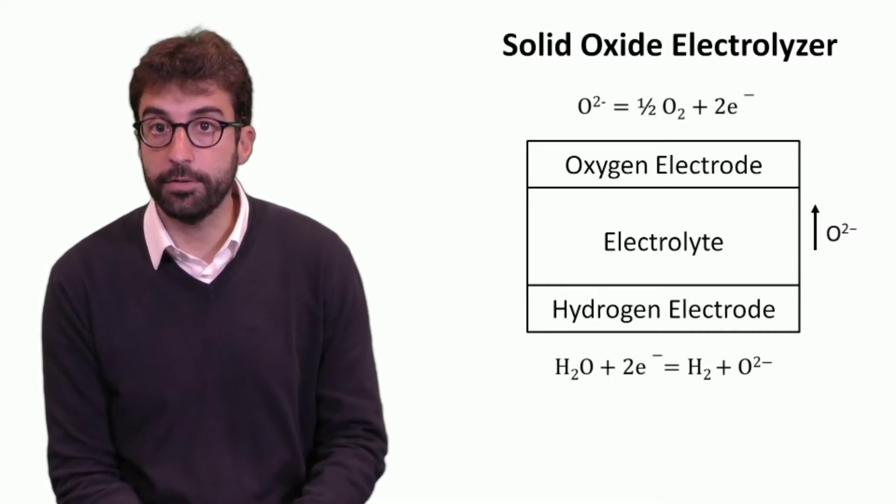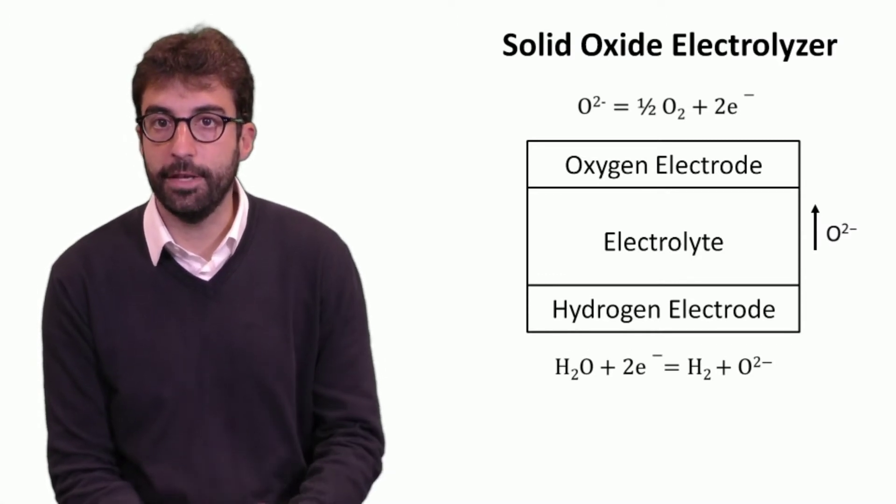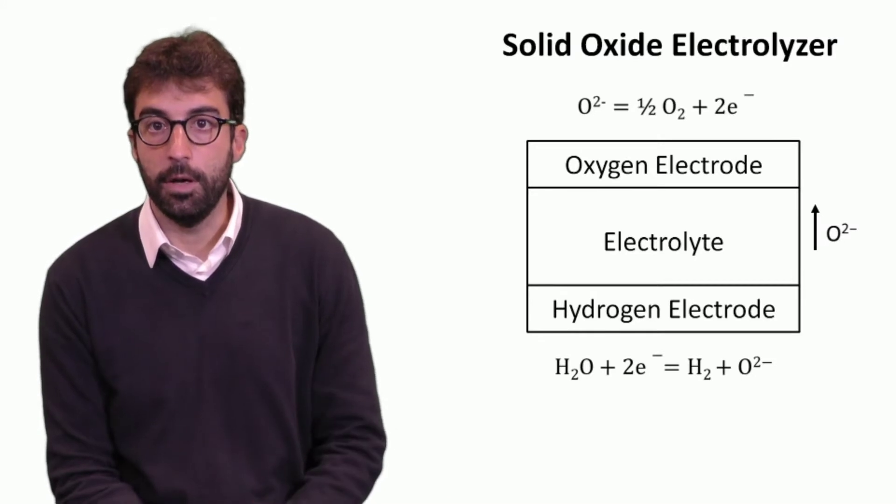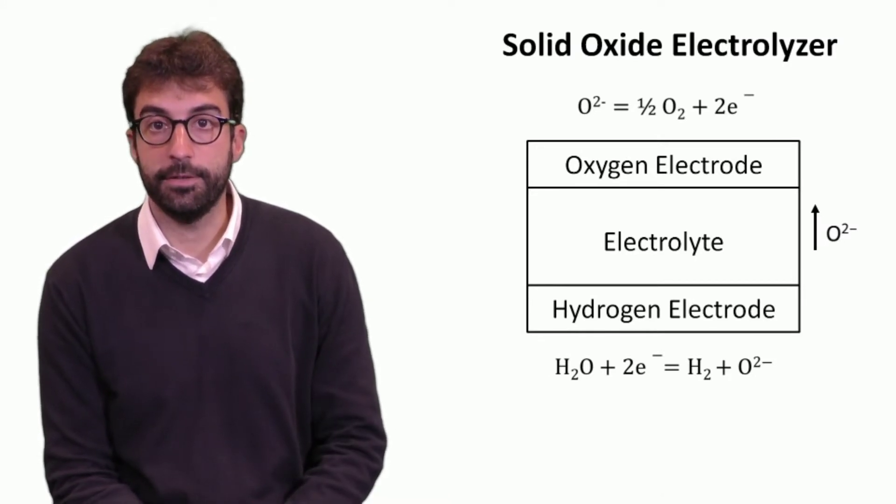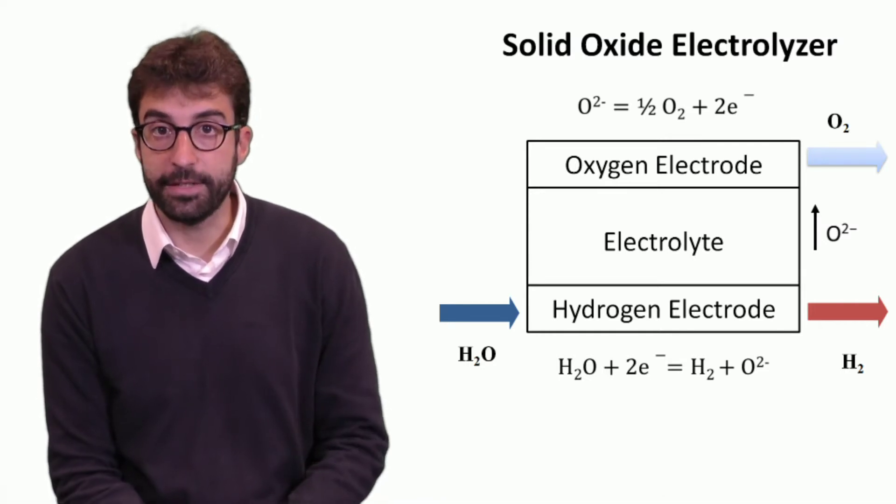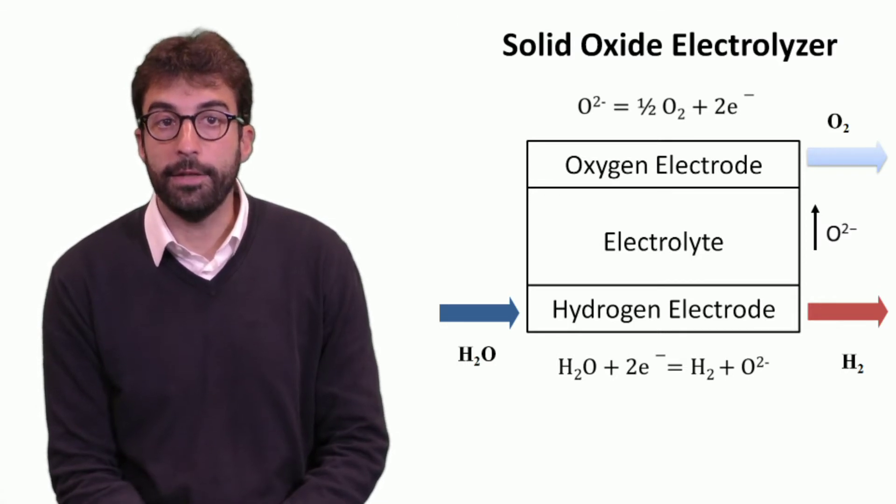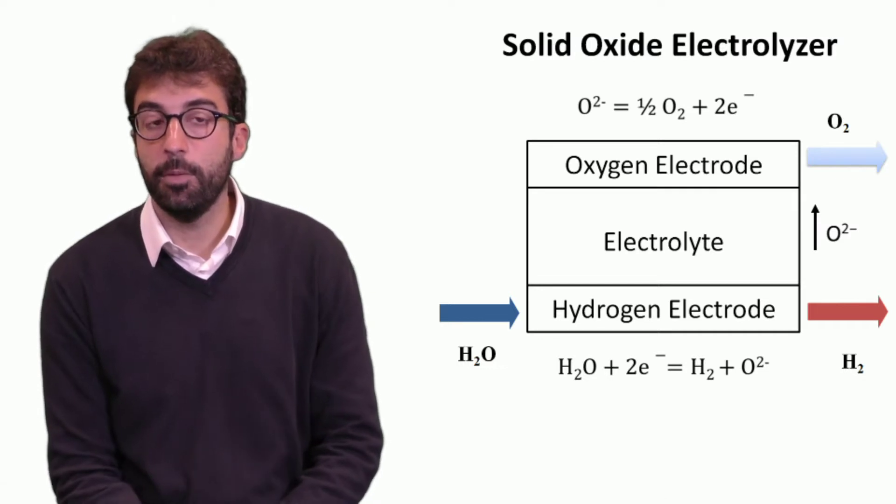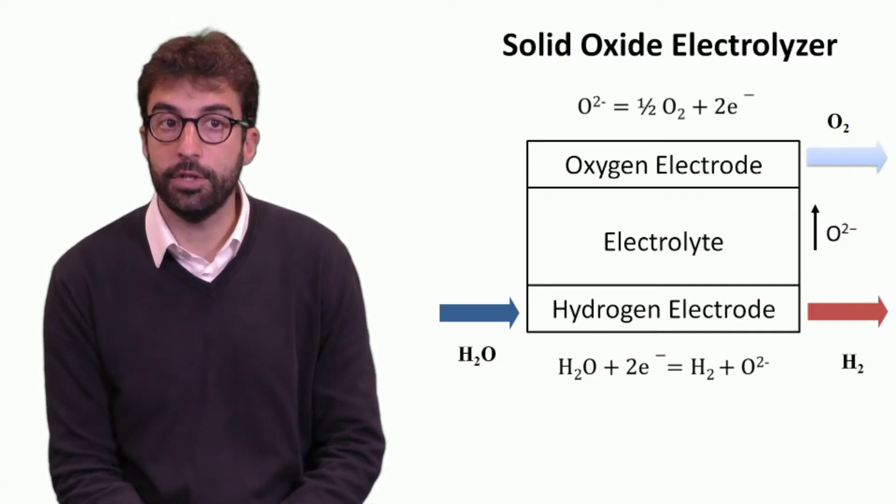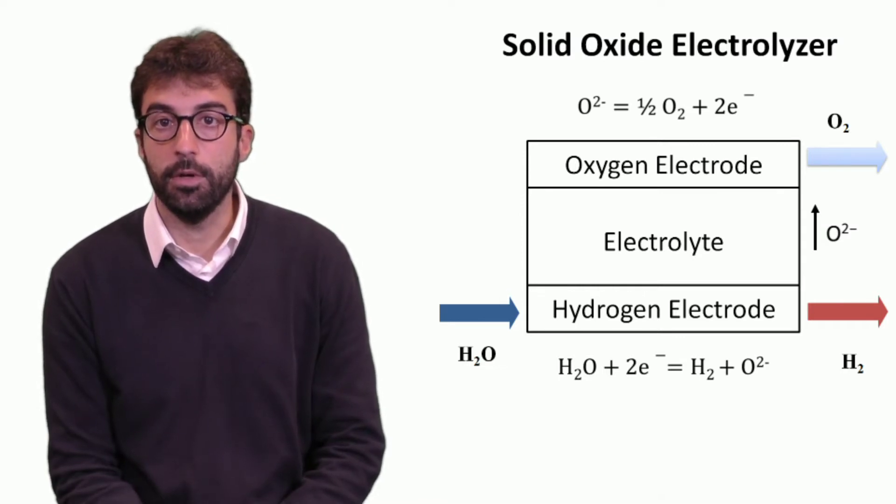Two electrons allow to activate the reaction, and it's the external power, the current that is necessary to feed the electrolyzer. So what happens is that we usually have steam as an inlet to the hydrogen electrode and hydrogen as output of the process, while at the oxygen electrode there is the production of oxygen. So theoretically we have a separation of oxygen and hydrogen during the process.